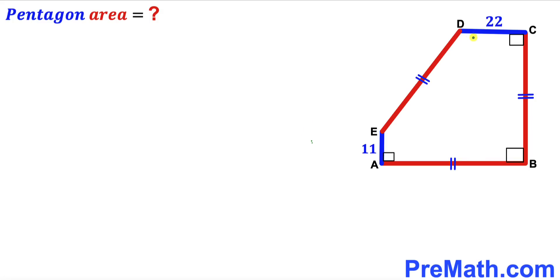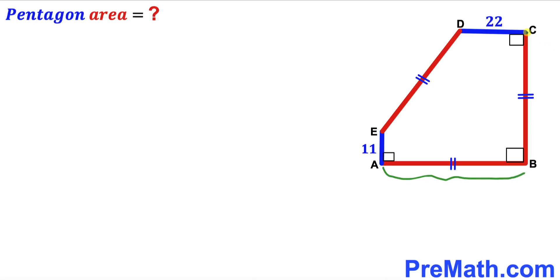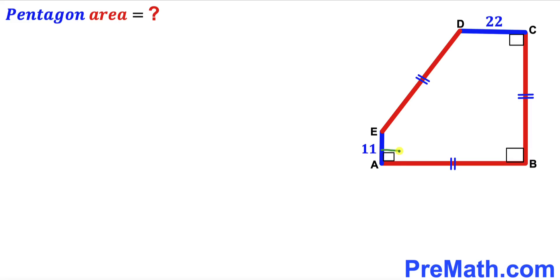Welcome to pre-math. In this video we have got this pentagon ABCDE as you can see in this given diagram, such that segment AE length is 11 units whereas segment CD length is 22 units. Moreover, side AB length equals side BC length and also side DE length, and furthermore these angles are 90 degree angles. Our task is to calculate the area of this pentagon.